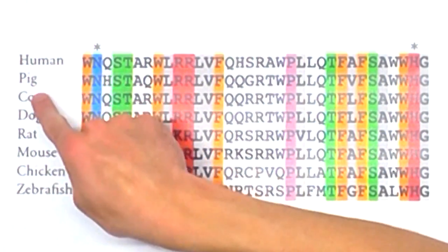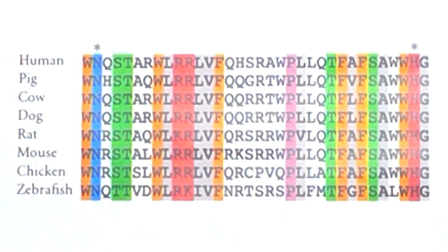Which two species are the most closely related out of human and pig, dog and chicken, or dog and cow? Using the amino acid sequence, work out which of those are more closely related. Human and pig, dog and chicken, or dog and cow? Press pause now and have a look.